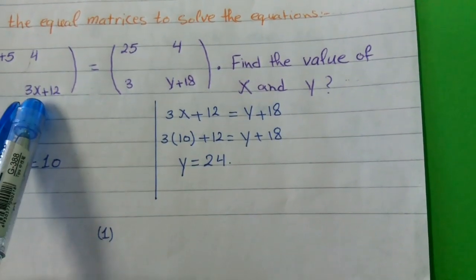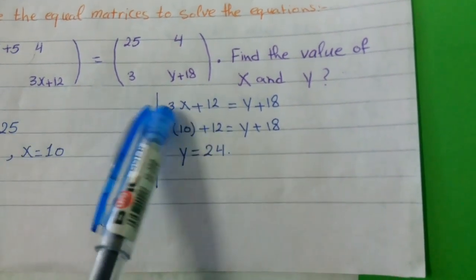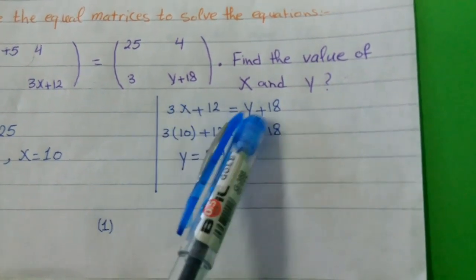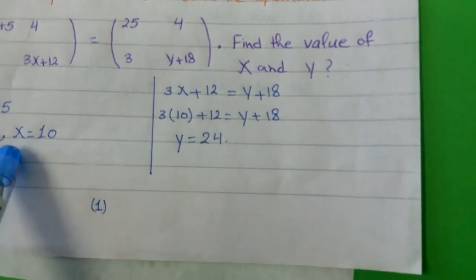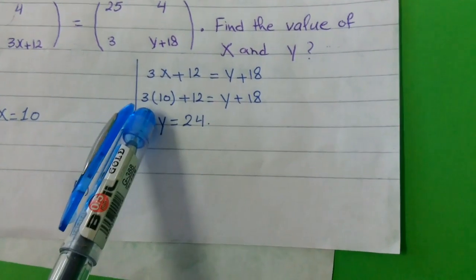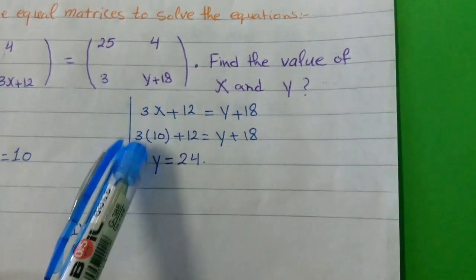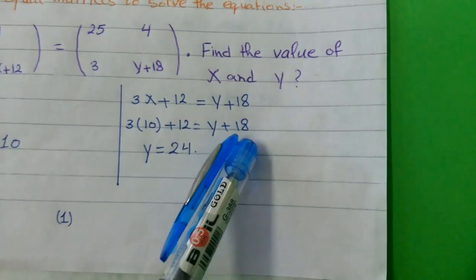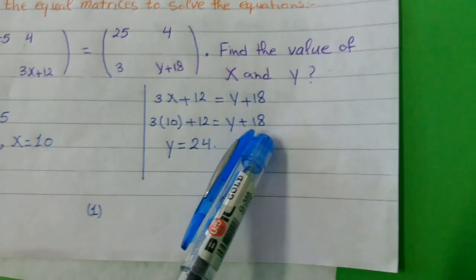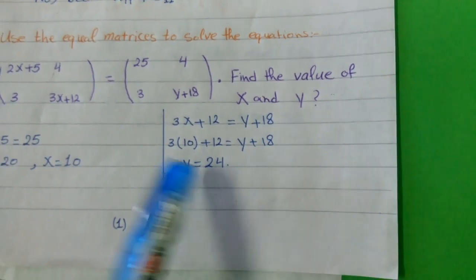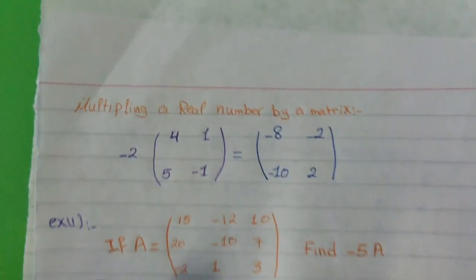For the other value: Y plus 18 equals 3x plus 12. Here you have two unknowns, X and Y. We already know X equals 10. Substitute X with 10: 3 times 10 plus 12 equals Y plus 18, so Y equals 24.